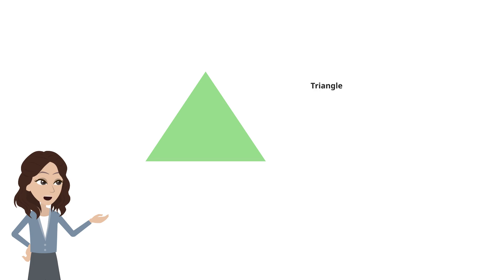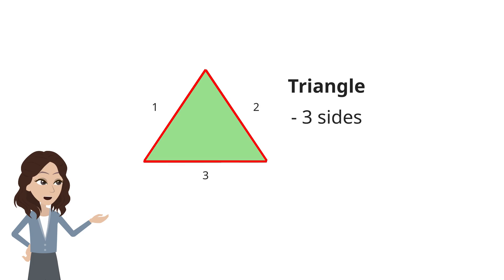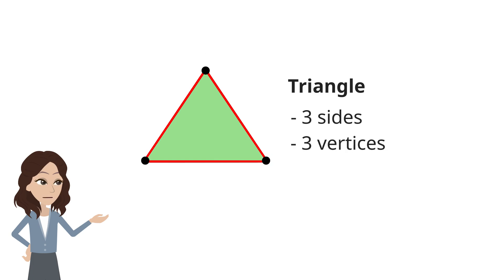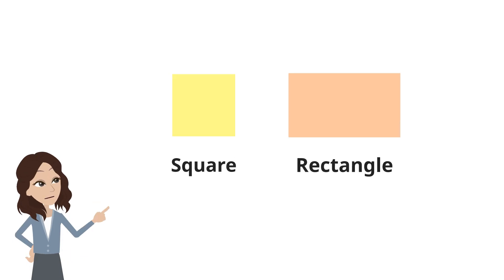This is a triangle. It is made of three straight line segments, so we say that it has three sides. The point where two line segments meet is called a corner or a vertex. One, two, three — a triangle has three vertices.